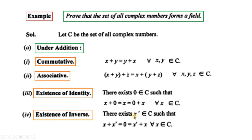There exists x' in C such that x + x' = 0 = x' + x. یعنی set C سے کسی بھی complex number کا additive inverse موجود ہے اور دونوں کا addition ہمیں additive identity دیتا ہے۔ ان چار properties اور closure property کے ساتھ ملا کر ہمیں معلوم ہوتا ہے کہ (C, +) abelian group ہے۔